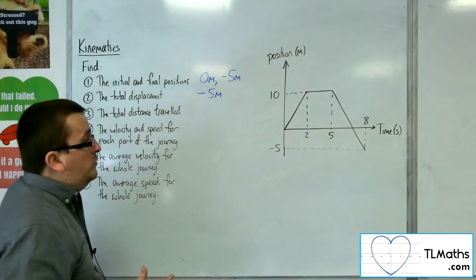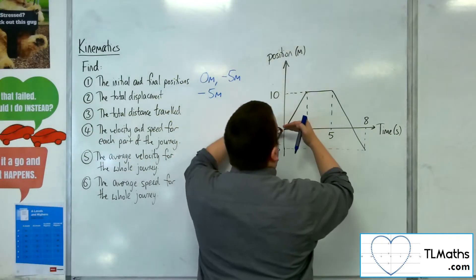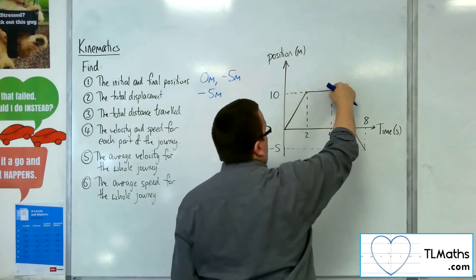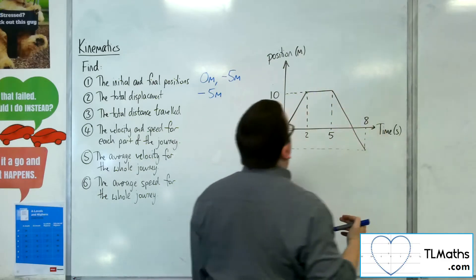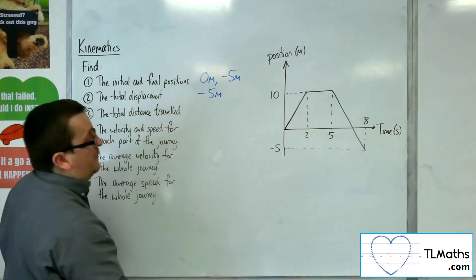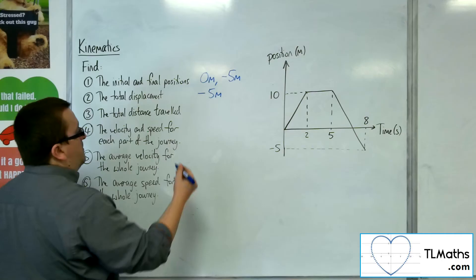The total distance travelled, well, we've gone 10 metres in the first two seconds. Stayed at that position for three seconds, and then have gone 15 metres back. So the total distance would be 10 metres, and then another 15, so 25 metres in total.